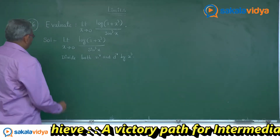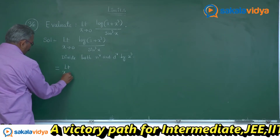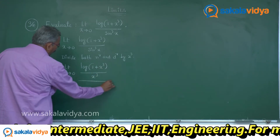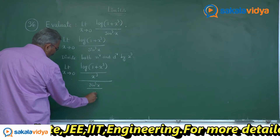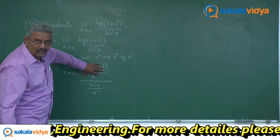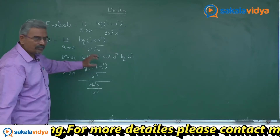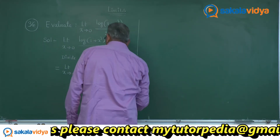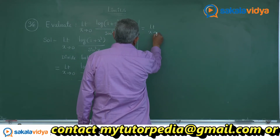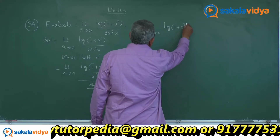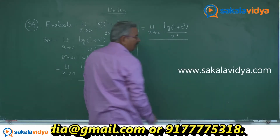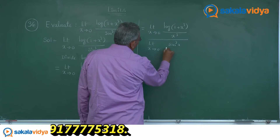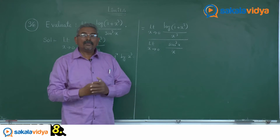Now this can be written as limit x tends to 0 of log of 1 plus x cube divided by x cube, all over sin cube x divided by x cube. Here we have one function in the numerator and another in the denominator. The limit is being applied to both numerator and denominator simultaneously. Now, limit x tends to 0 of log of 1 plus x cube divided by x cube, divided by limit x tends to 0 of sin cube x by x cube. For our convenience the limit can be changed without changing its identity.